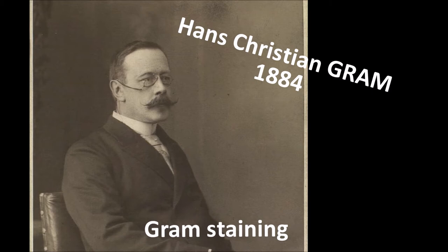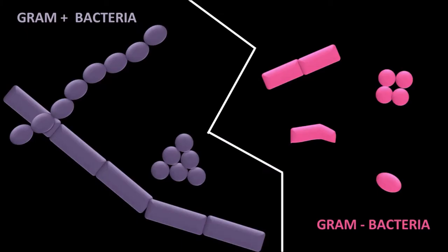After gram staining, we can observe under a microscope purple bacteria, which will be called gram positive, or pink bacteria, which will be called gram negative.